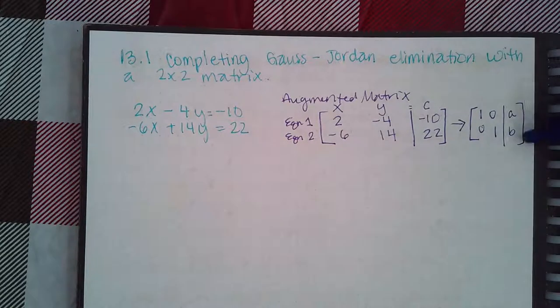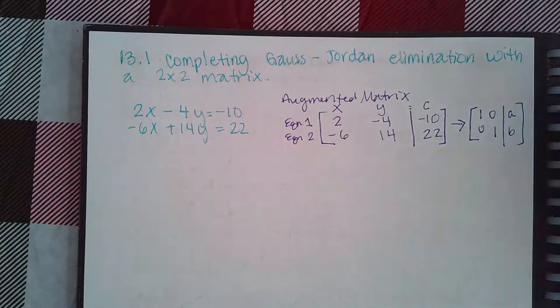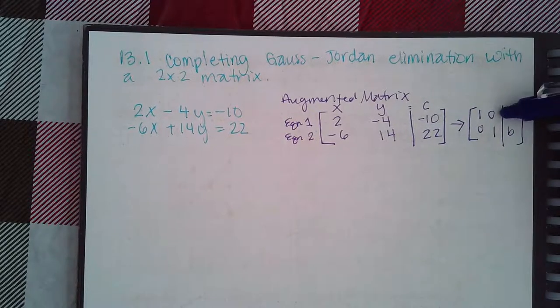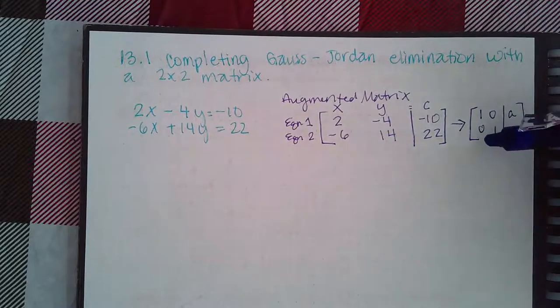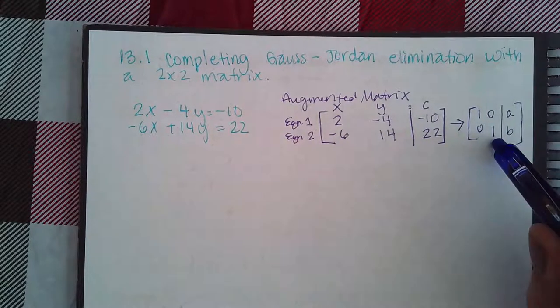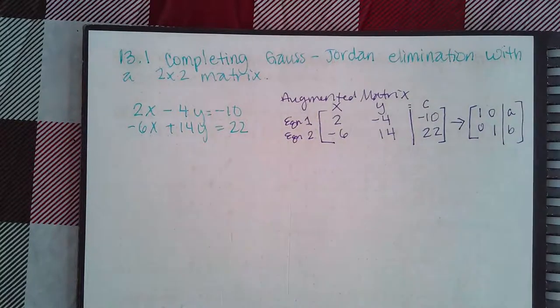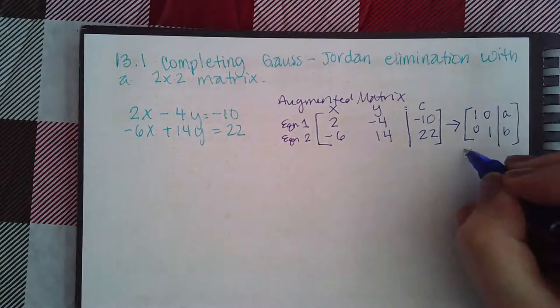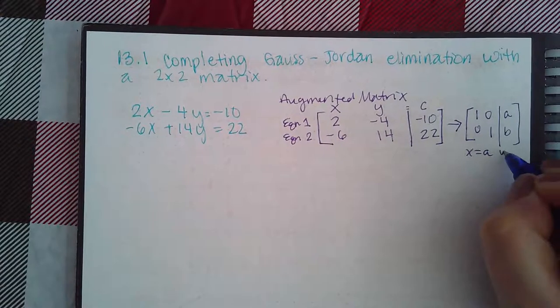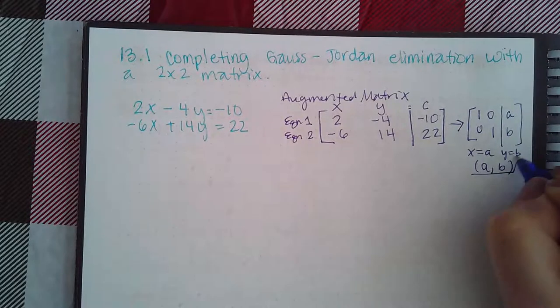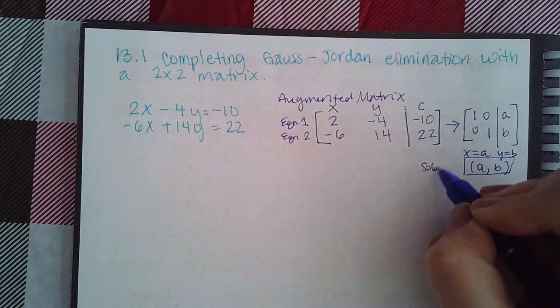And whatever you end up with on this side will be your solutions. Because you're basically saying 1x and no y's equal this number, so now you know what x equals. Here you're saying no x's, but 1y equals this number, so now you know what y equals, and therefore you've solved the system. x will equal a, y will equal b, and so if I write this in point form, this would be the actual solution.